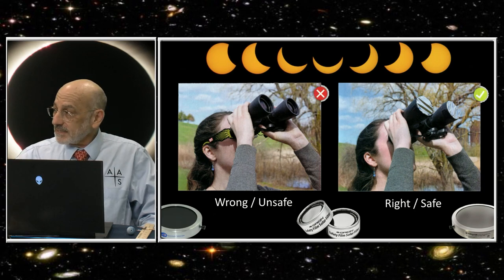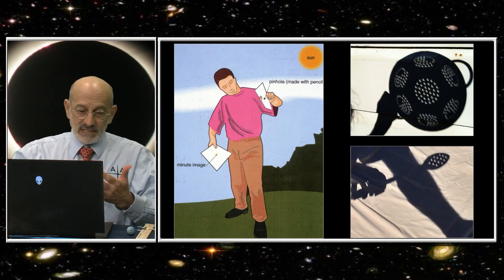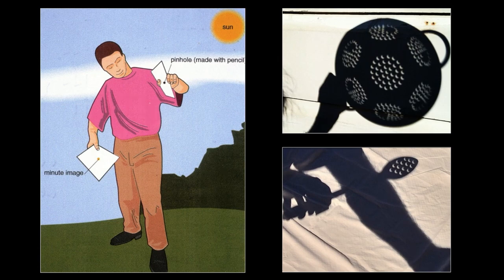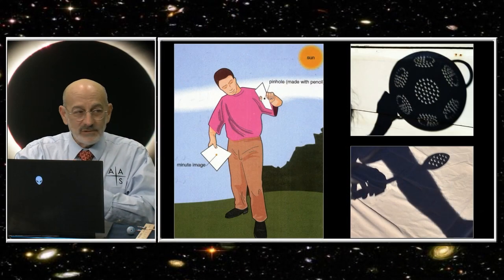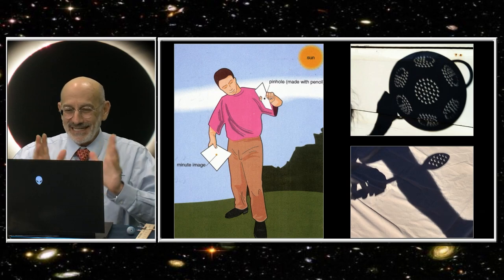What if you can't find eclipse glasses or you forgot to bring them? There's other safe ways to look at a solar eclipse. The next slide shows a pinhole projection. Very simple. You just take a card, punch a hole in it. What makes it safe is you've got the sun at your back and a little hole in the card projects an image of the sun. You'll see the crescent sun during the partial phases.